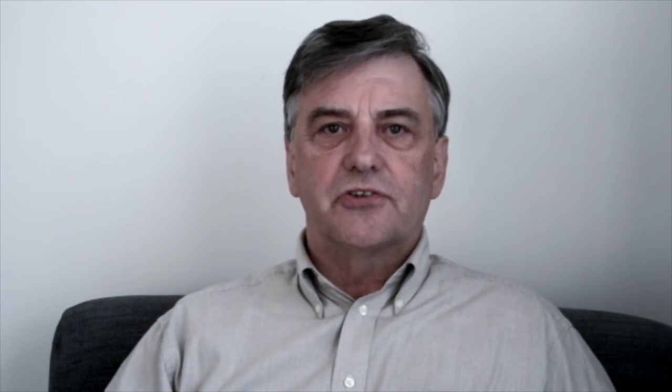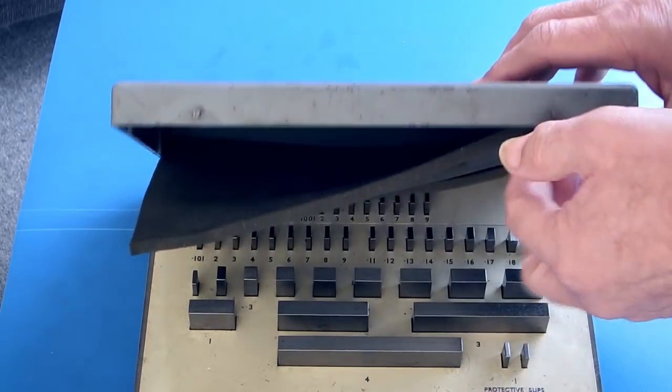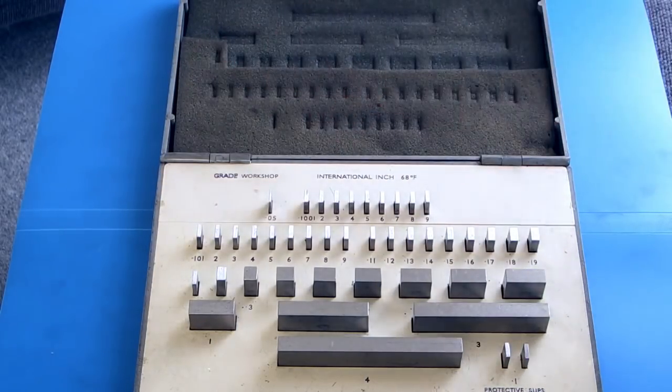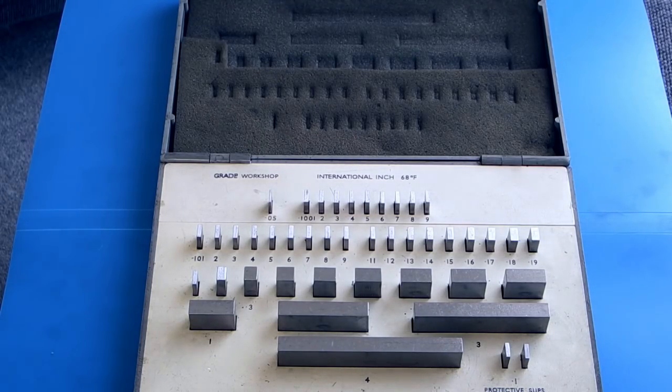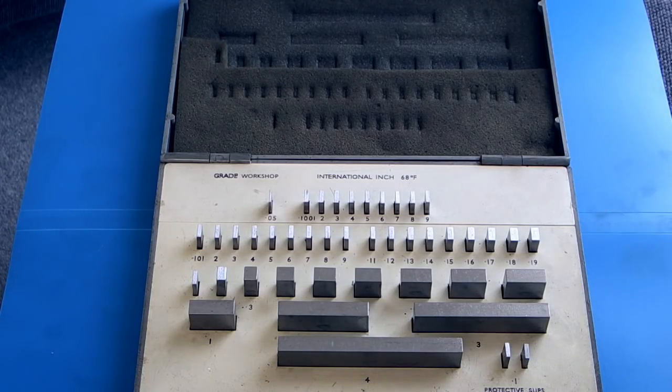I picked up this set of gauge blocks so what I will do is have a look at these, discuss how they're used, how you set up micrometers, and basically it's a bit back to basics. They cost £40 and I just thought I'd explain a bit about gauge blocks to people who've probably never seen them before or haven't been in engineering very long or are just starting.